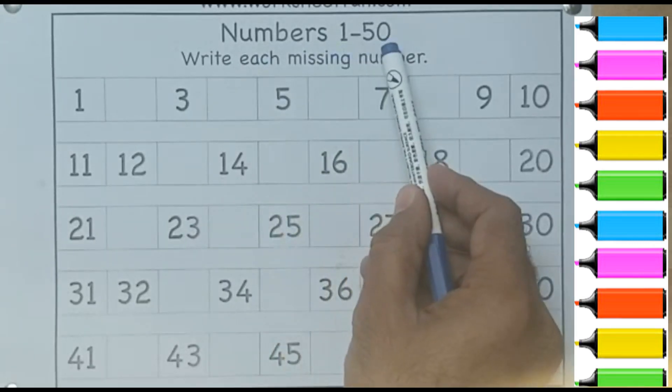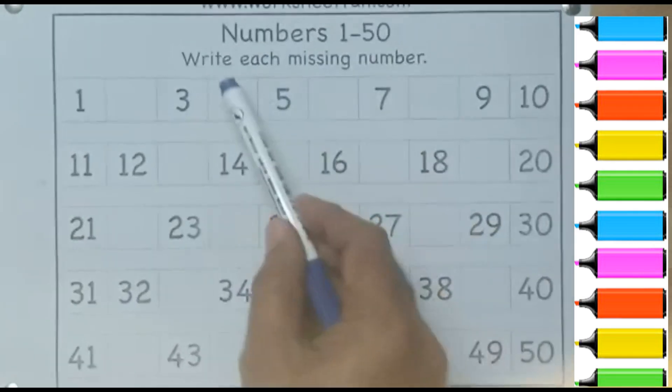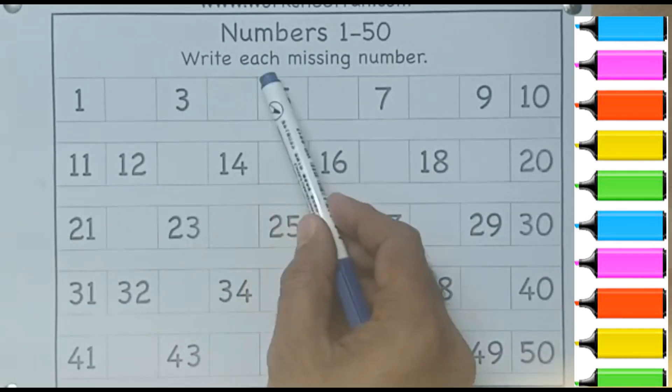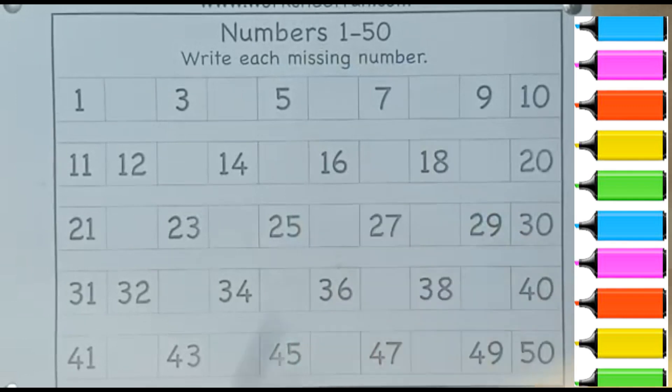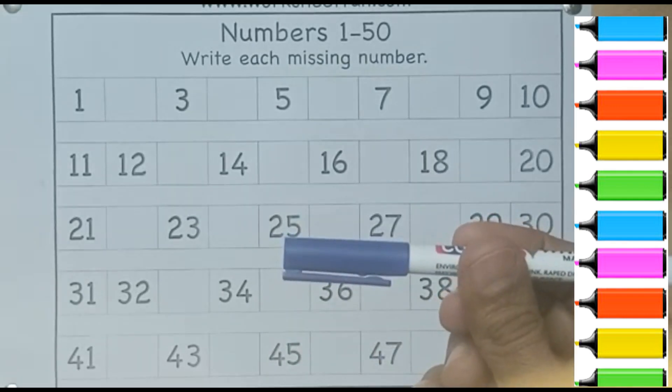Number 1 to 50, write each missing number. Blue color.